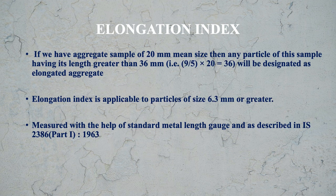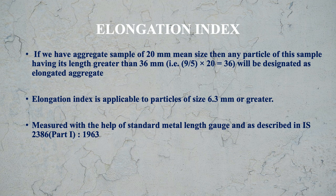For example, for an aggregate sample of 20mm mean size, any particle having length greater than 36mm (that is 9/5 × 20mm) will be designated as elongated aggregate. The Elongation Index is applicable to particles of size 6.3mm or greater. It is measured with a standard metal length gauge as described in IS 2386 Part 1 1963.